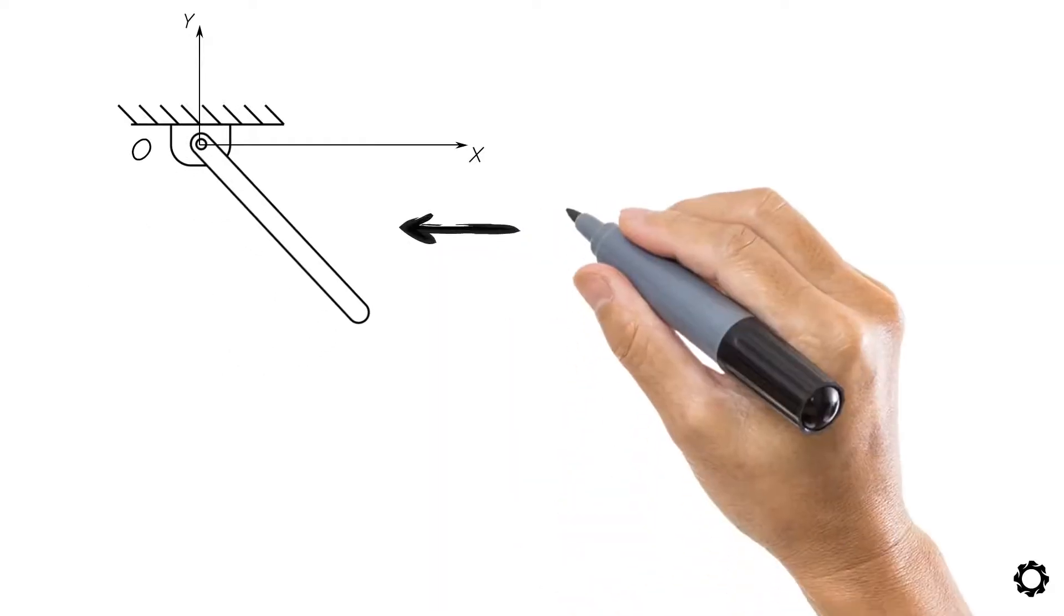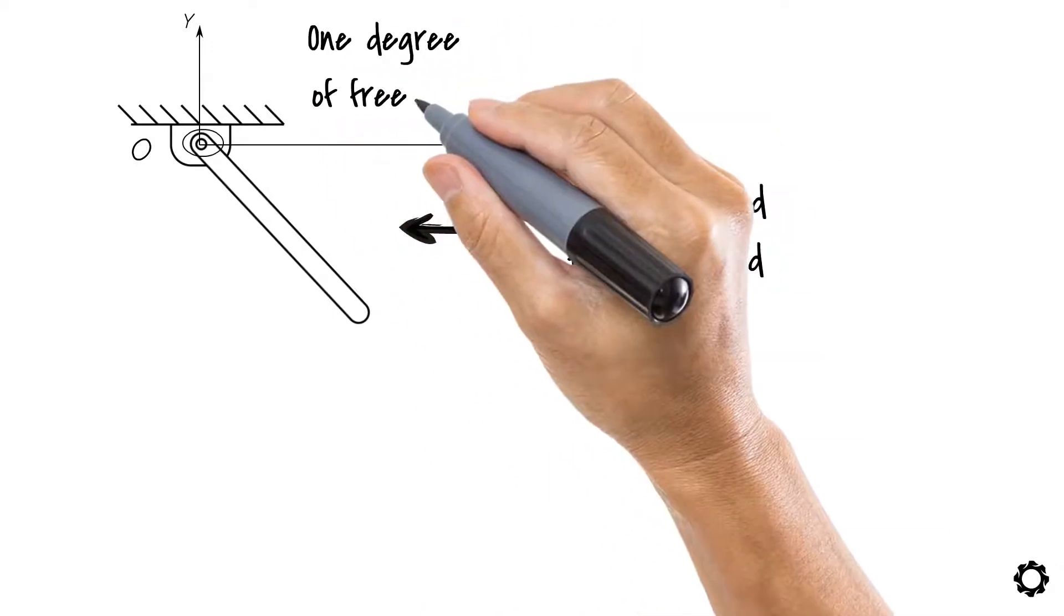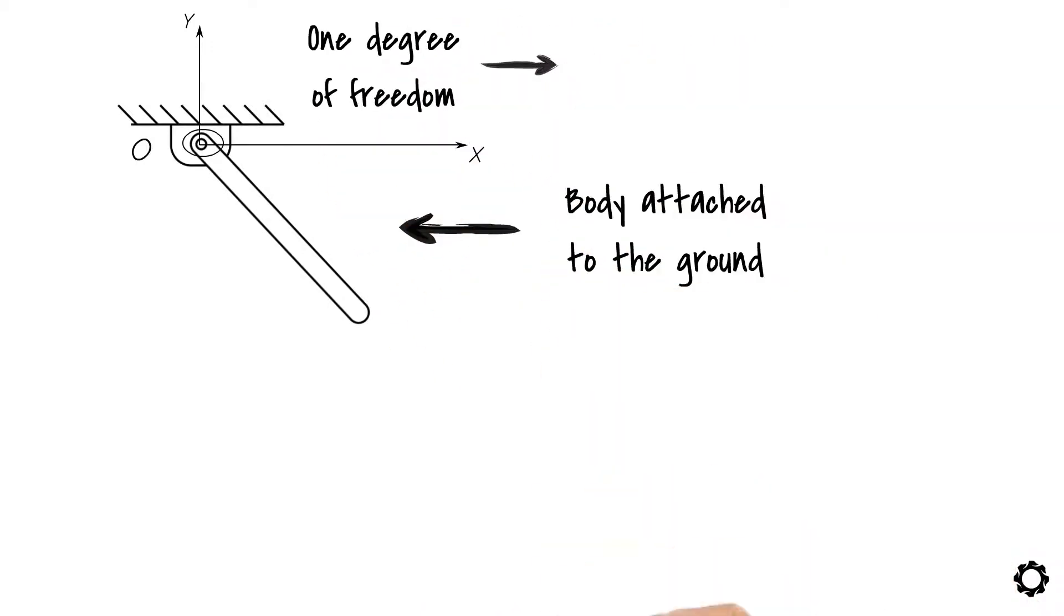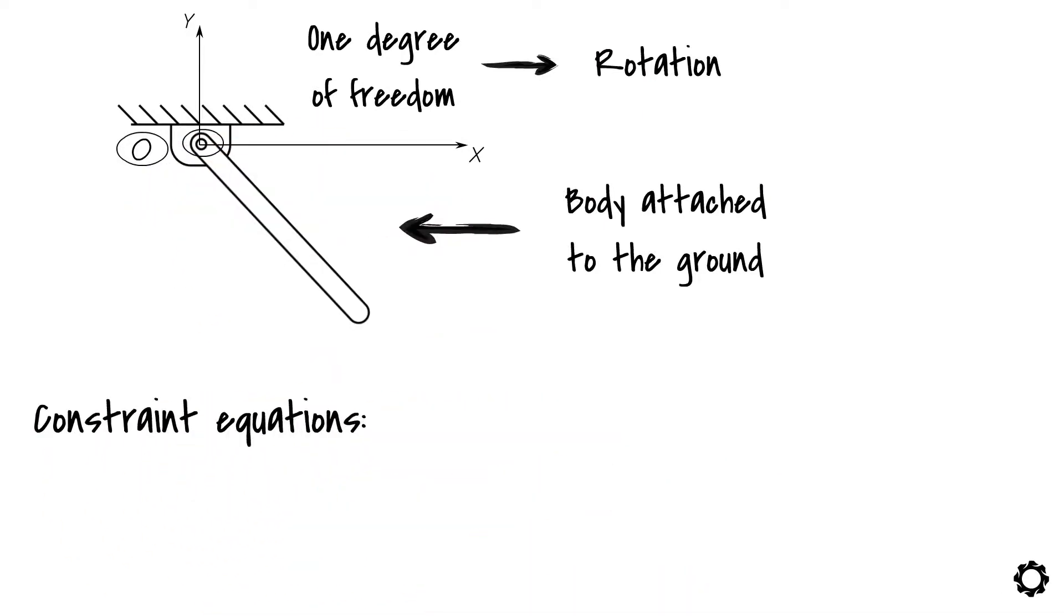This mechanism has a body attached to the ground through a revolute joint leaving one degree of freedom, which in this case, it is easy to see that it is the rotation around point O in the revolute joint. The constraint equations of this system are C1 is Rxa minus L by 2 cos theta A equals 0.